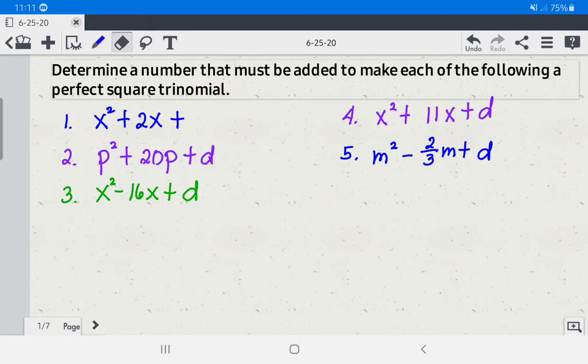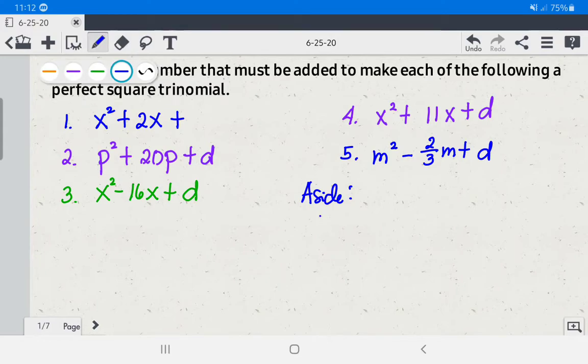We have x squared plus 2x plus d. Let us put d aside. Then look at the numerical coefficient of the middle term. That is 2. You're going to copy that and then divide it by 2 or multiply it by 1 half. In this case, let us divide by 2. We have 2 divided by 2 equals 1. Then square it. So the answer is 1.